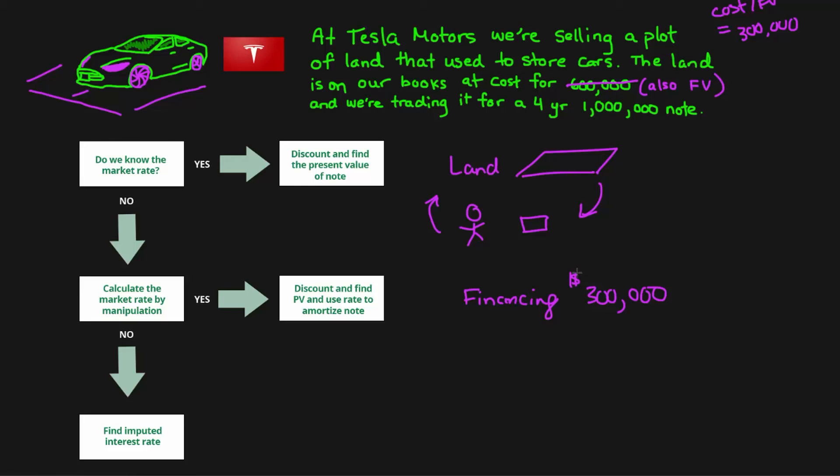To find the imputed interest rate, we would have to look at certain factors. We would look at similar rates in the marketplace as to how much other lenders are loaning $300,000 at. We would look at the payment schedule or the interest payments. In this case, we don't have any interest coupons. It's a zero discount note. And if there are coupons, that will affect its market or effective rates.